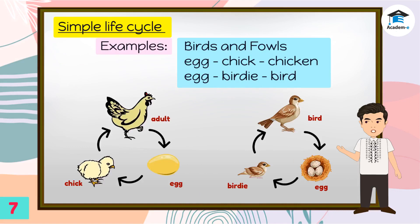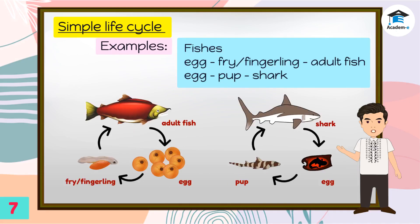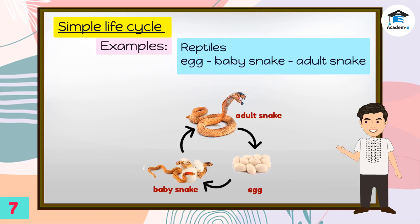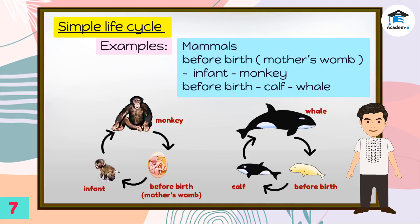Birds and fowl like chickens develop inside the parent animal in an egg. Most female fishes lay their eggs in open waters and the males fertilize these. They are cold-blooded animals. All reptiles are cold-blooded animals like crocodiles, alligators, snakes, and turtles. Their life cycles begin as eggs. Mammals are warm-blooded animals. After fertilization, the young develops and grows inside the female mammal's body. Some mammals like horses, monkeys, and cows produce only one young at each birthing. Other mammals like whales, dolphins, dogs, and cats have two or more young at each birthing. After giving birth, female mammals nurse or feed their young with milk.